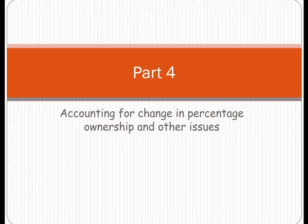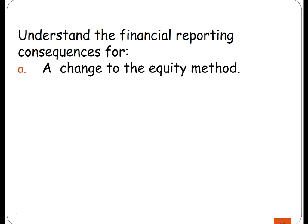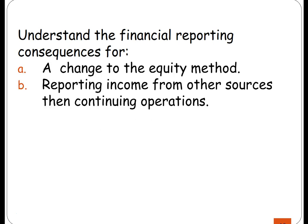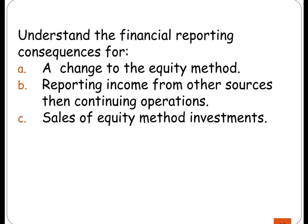This is Part 4 of the presentation on equity investments, covering accounting for change in percentage ownership, other comprehensive income as part of the subsidiary's income, and what happens if we sell while using the equity method. We'll understand the financial reporting consequences for a change to the equity method, reporting income from other sources beyond continuing operations, and sale of equity method investments.